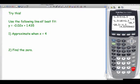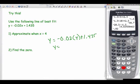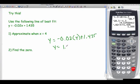So I want you to try this. Use the following line of best fit. Approximate when x is 4 and find the zero. I'll pause it and come back in a sec. Here we go. So approximately when x equals 4. So y equals negative 0.02. I have one too many zeros there, folks. Y equals negative 0.02 times 4 plus 1.435. So here we go. So y equals, I'm going to put this right in here, negative 0.02 times 4 plus 1.435. Now, I've been rounding to tens, but I started with more than tens. I started with tens, hundreds, thousands. So I'm going to leave it as thousands here. So that's called significant digits. So that's 1.355.